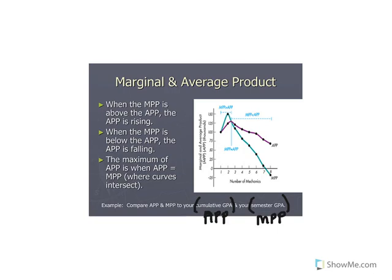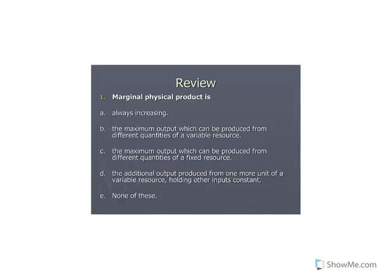To review: marginal physical product is the additional output produced from one more unit of a variable resource, holding other inputs constant. Whenever you see the word 'marginal,' think incremental or additional — marginal is always the incremental or additional change in something.